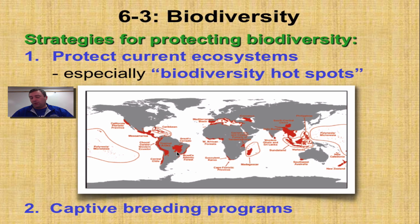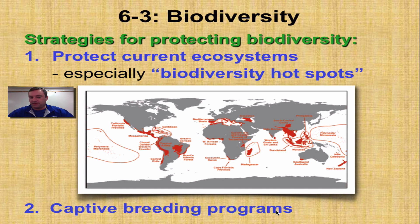Another way we can help protect biodiversity is through captive breeding programs. Zoos and people around the world are trying to breed these animals so we don't lose them. This has been really important for tigers, because tigers live in these heavily developing areas where there's a population boom and their habitat is being altered and destroyed.